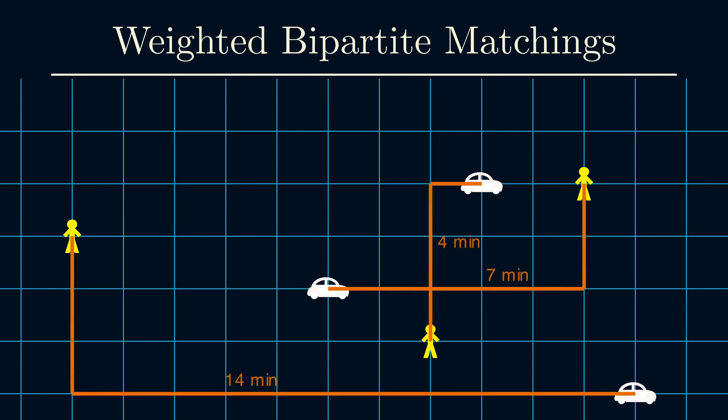Let's say we go with waiting time. Here in this assignment, the total waiting time is 4 plus 7 plus 14, which is 25 minutes. But there are lots of other possible assignments. Can we find the one with the least total waiting time?